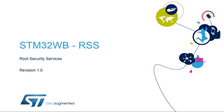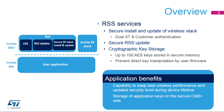Welcome to this presentation of the STM32WB Root Security Services Features. The Root Security Services, or RSS, is a protected firmware executed by the Cortex-M0 Plus Core. It is used to securely install and update the wireless stack using cryptographic mechanisms to ensure its integrity and authentication. The update of the wireless stack is key to guaranteeing the best performance and security level throughout the device's lifetime.